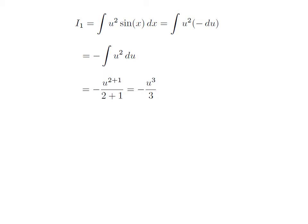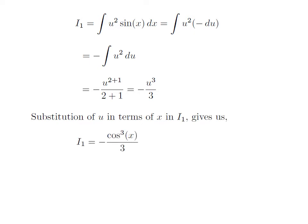Since the integration of u² with respect to u is equal to u^(2+1) / (2+1), that is u³/3, so I1 is equal to -u³/3. We had solved the integration in terms of u, so now we replace u with cos(x). Therefore, I1, which is the integral of cos²(x) · sin(x), is equal to -cos³(x)/3.